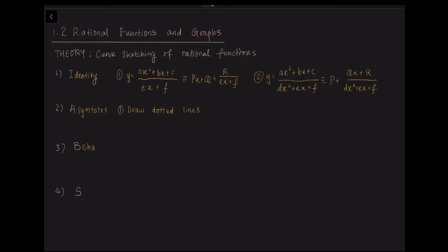The third step is to look at the behavior of the curve. We will consider the behavior of the function for large positive values of X, and then large negative values of X. Also, we will consider the behavior of the function for values of X either side of the vertical asymptotes, noting that the value of the function switches from large and positive to large and negative or vice versa, unless a factor at the critical value is repeated twice.